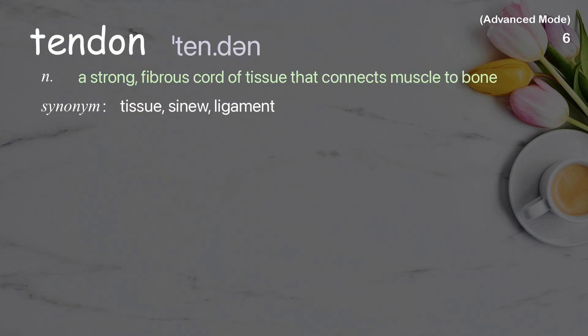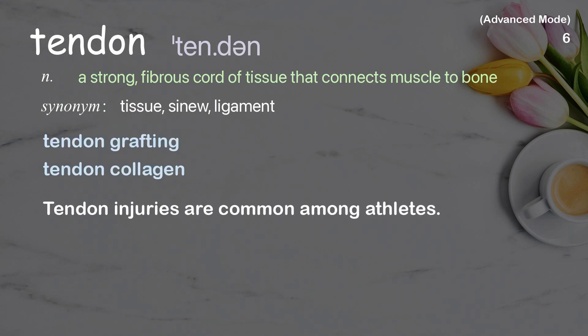Tendon: a strong fibrous cord of tissue that connects muscle to bone. Examples: tendon grafting, tendon collagen. Tendon injuries are common among athletes.